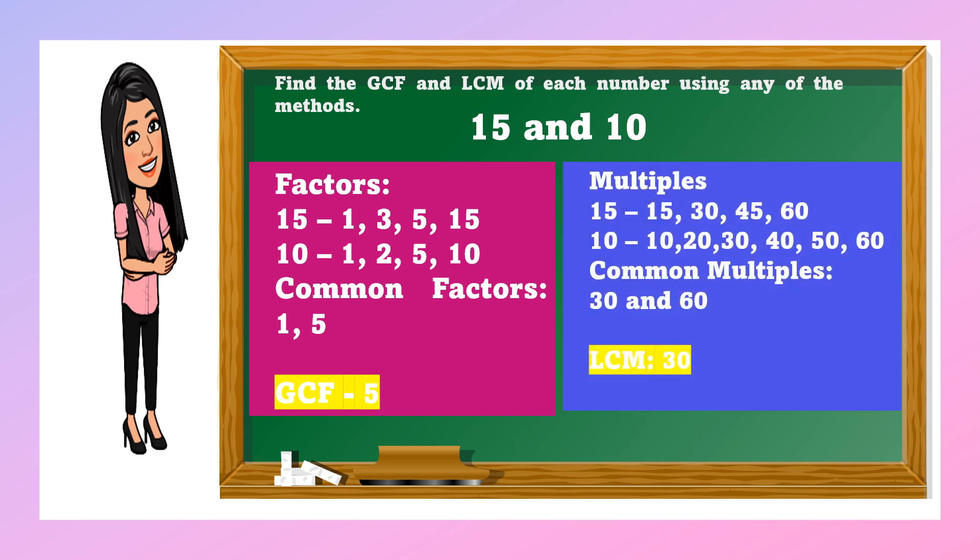When we say multiples, we're going to skip counting: 15, 30, 45, 60, and 10, 20, 30. Take note, children, when you see that they have a common lower number, you can stop. So, since I want to continue it, 40, 50, 60. Common multiples - they are the same at 30 and 60. The least common multiple is 30.